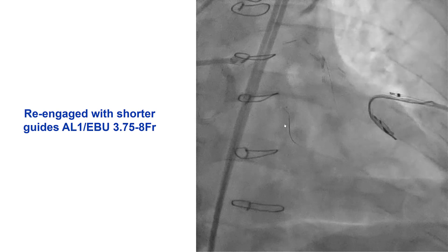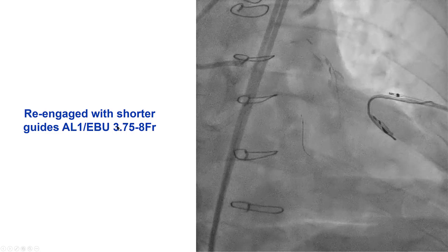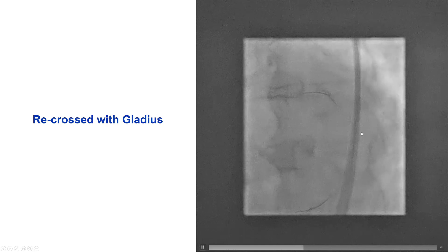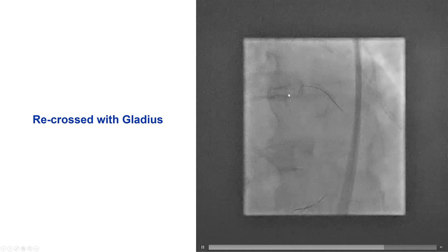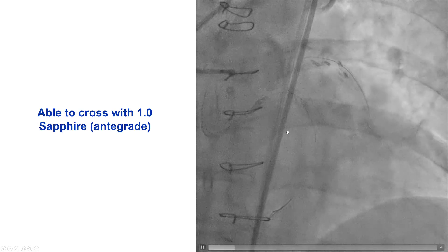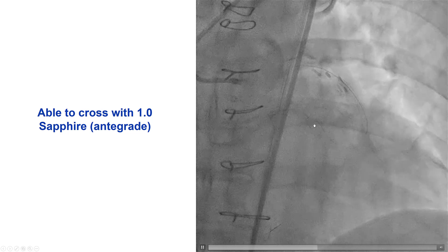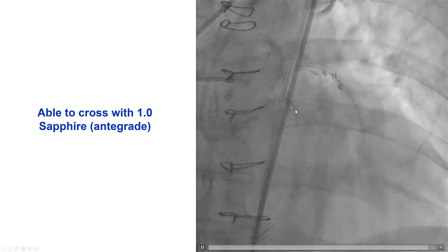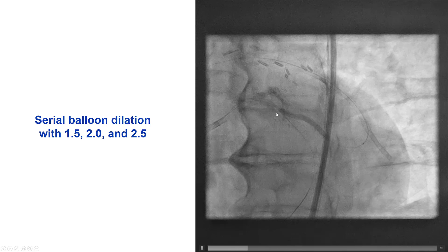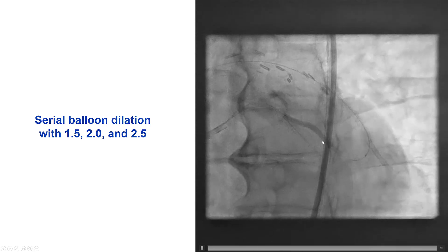We started crossing again, this time engaging with short 90 cm guide catheters. Fortunately, perhaps because we had done the crossing with a microcatheter retrograde previously, we were able to cross without much difficulty using a retrograde Gladius guide wire that crossed through the occlusion into the proximal portion of the vessel. We externalized the R350 again. This time, maybe because we crossed through a different part of the occlusion, we were able to advance an antegrade 1.0 mm Sapphire balloon and then progressively larger balloons, successfully dilating the proximal cap as well as the CTO and the diffusely diseased distal vessel.